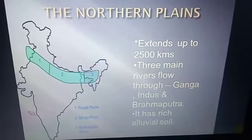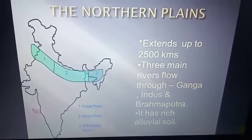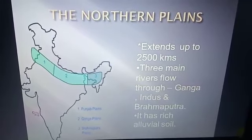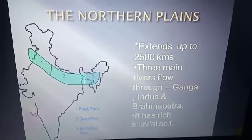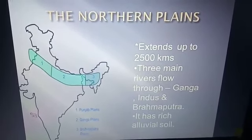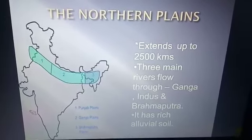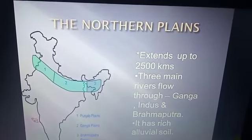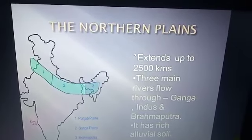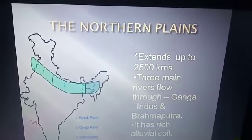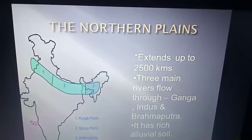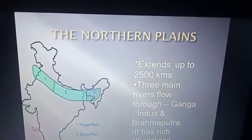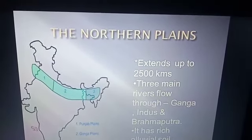In this video of Class 9 Geography, I shall discuss the second physiographic division of India — the Northern Plains. The Great Plain of North India has been formed mainly by the depositional work of rivers: the Indus, the Ganga, and the Brahmaputra, and is often termed as the Indus-Ganga-Brahmaputra Plain.